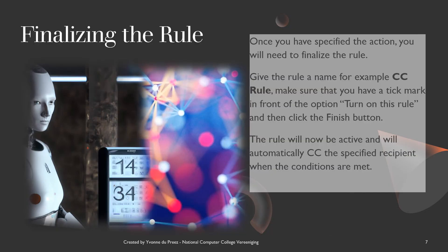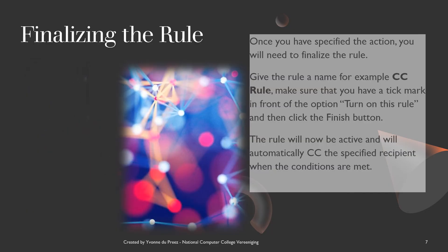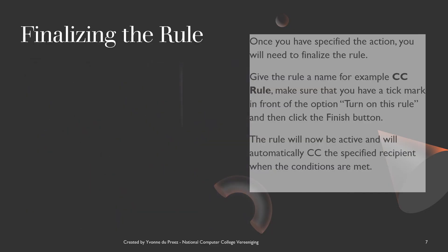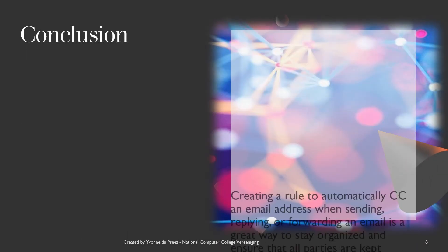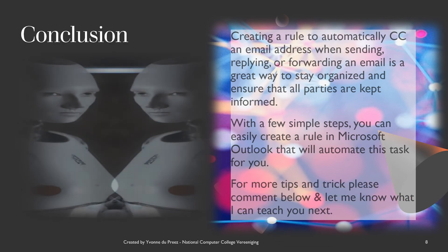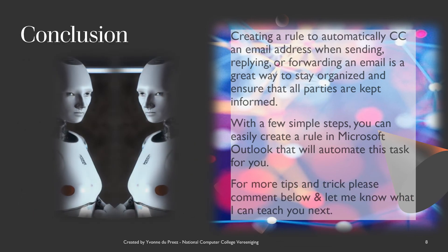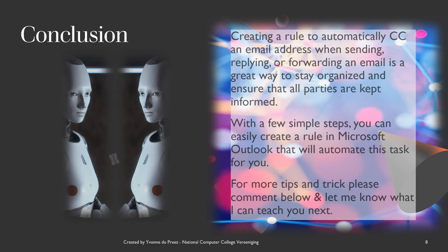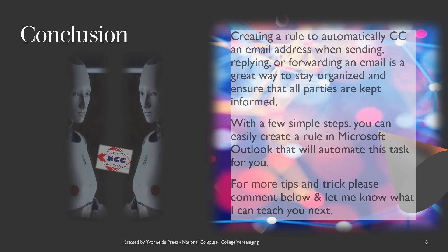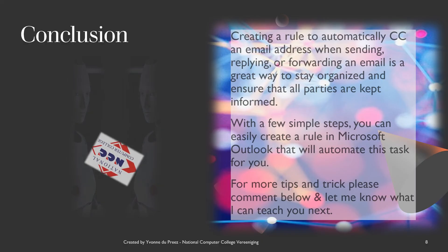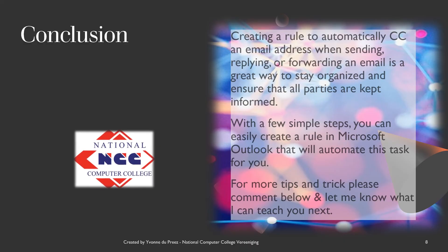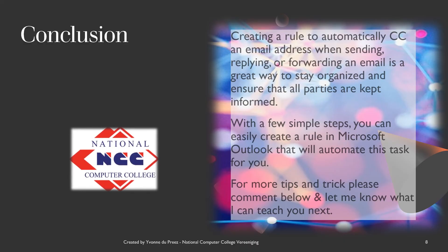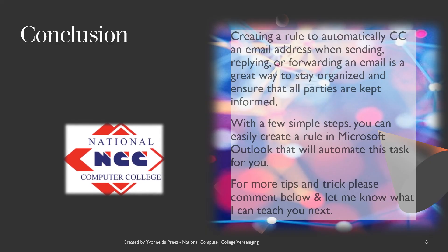The rule will now be active and you will automatically CC the specified recipients when the conditions are met. As you can see, it is easy to set up rules in Microsoft Outlook. Creating a rule to automatically CC an email address when sending, replying, or even forwarding an email is a great way of staying organized and ensuring that all parties are kept informed. With a few simple steps, you can easily create a rule in Microsoft Outlook that will automate these steps for you.